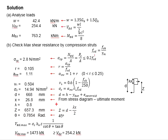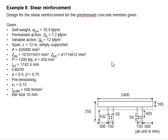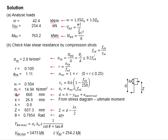The next step is to determine the lever arm as stated in the equation here. You require the effective depth of the section, which can be obtained from the equation here. By referring to the section, the effective depth D is calculated from the height of the member minus the centroid plus the eccentricity. That gives you the effective depth of the reinforcement. The calculated effective depth will be equal to 668 mm.